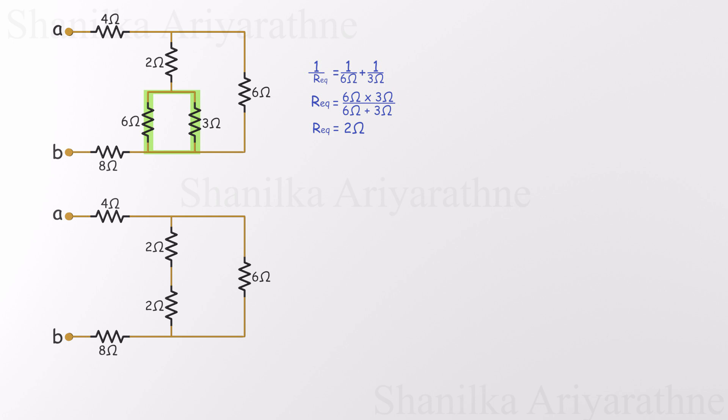Let's redraw the circuit again. See how much simpler it's becoming with every step. Now we're back to a simple case: two resistors in series, both 2 ohms. Adding them is straightforward: 2 plus 2 equals 4 ohms. So we replace those two resistors with a single 4-ohm resistor.